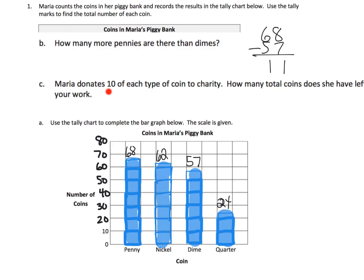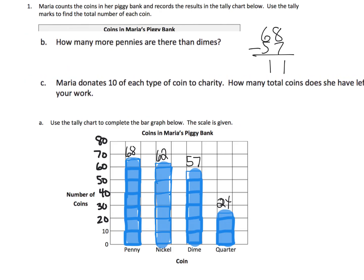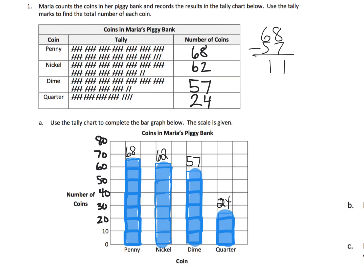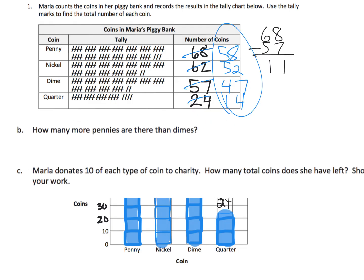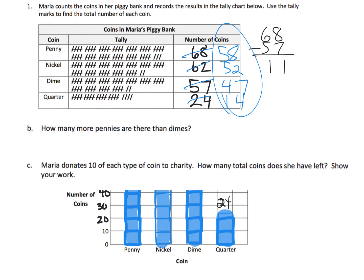And lastly: Maria donates 10 of each type of coin to charity. How many total coins does she have left? We need to show our work. If she gave away 10 of each coin, we'd have 58 pennies, 52 nickels, 47 dimes, and 14 quarters. Now we're going to have to add those together to figure out how many total coins she will have left over.